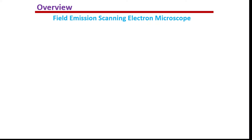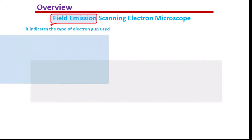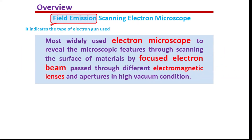Field emission scanning electron microscope — field emission indicates the type of electron gun used. The electron gun is the main source of electrons. This is the most widely used microscope or electronic microscope to reveal microscopic features through scanning the surface of materials by a focused electron beam.